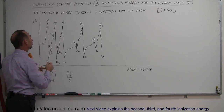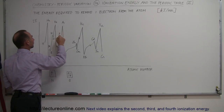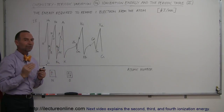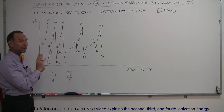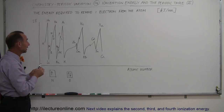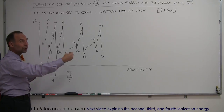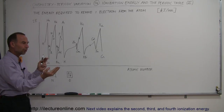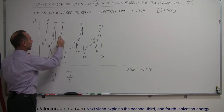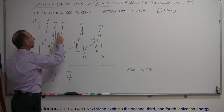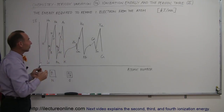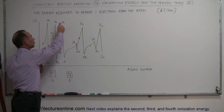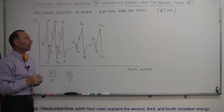We keep going up until we hit phosphorus, where all three P-orbitals each have one electron. It becomes more and more difficult to remove an electron, but when we go to sulfur we put a second electron into one of the P-orbitals. That second electron is easier to remove than a lone electron in a P-orbital, so the ionization energy drops, then continues to rise until we hit the noble gas argon.